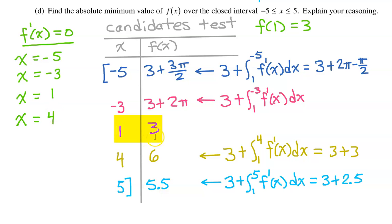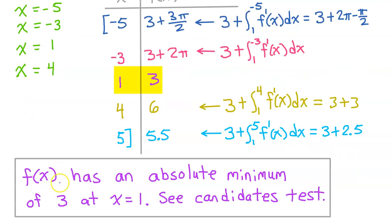We were looking for the absolute minimum and we can easily see that the lowest value is 3, which occurs at an x value of 1. f of x has an absolute minimum of 3 at x equals 1. See candidates test.